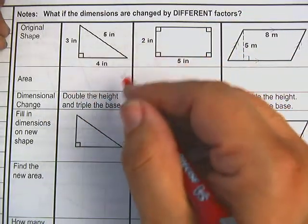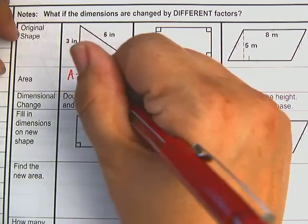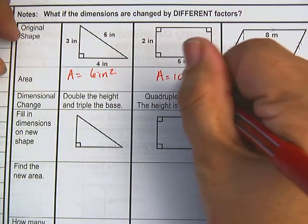So here you can see my original shapes that we had before. Our areas are no different. This is still 6 inches squared. This is still 10 inches squared.